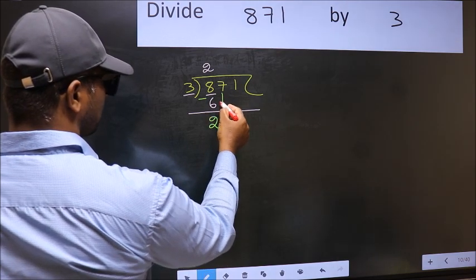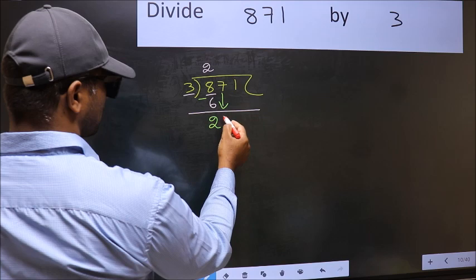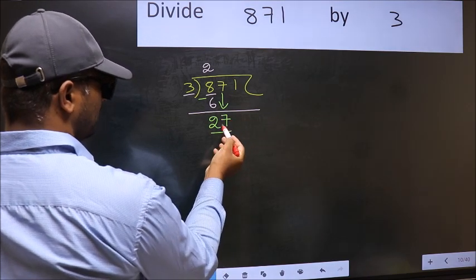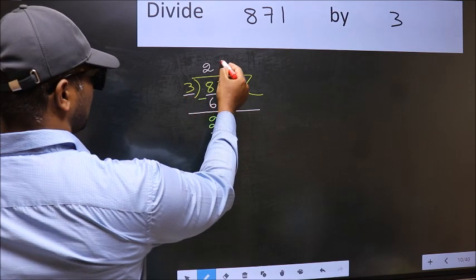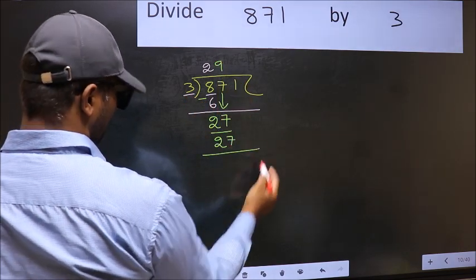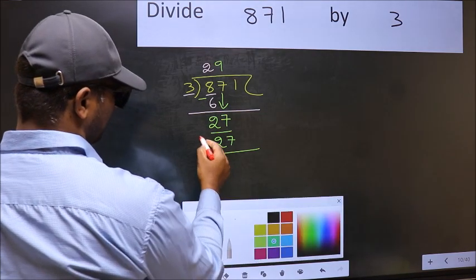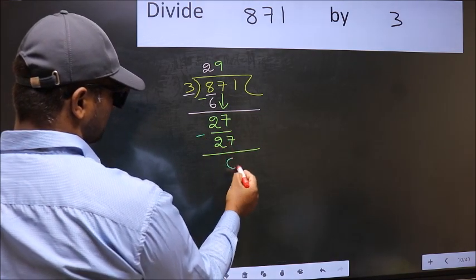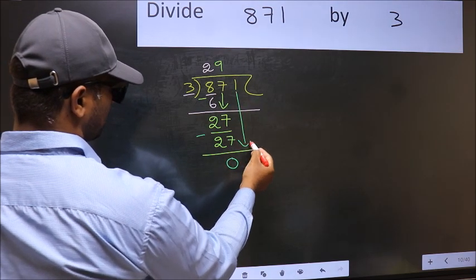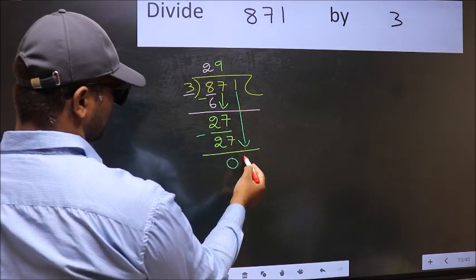After this, bring down the number beside it. So 7 down, now 27. When do we get 27 in the 3 table? 3×9=27. Now you should subtract. 27 minus 27 is 0. After this, bring down the number beside it, so 1 down.